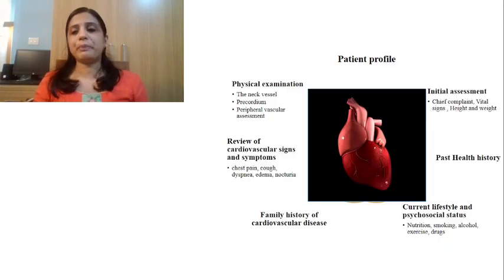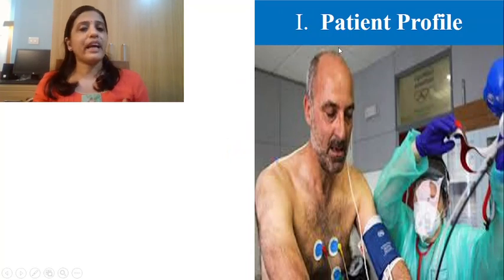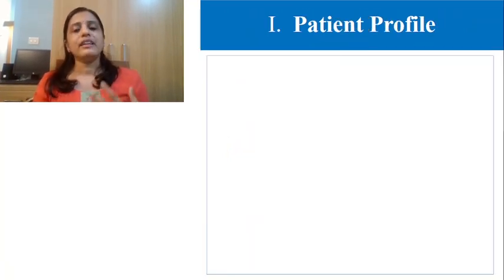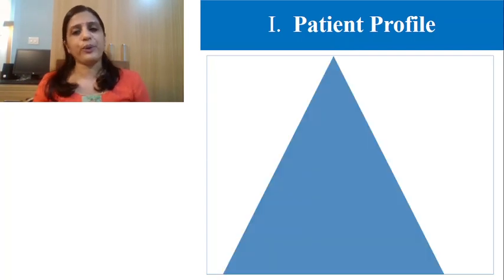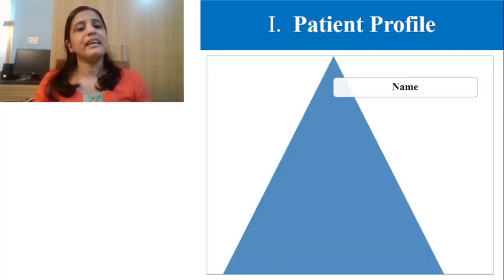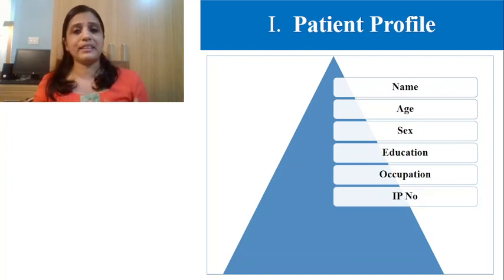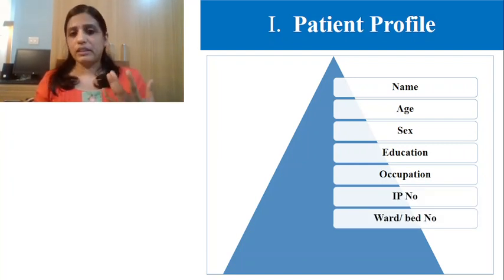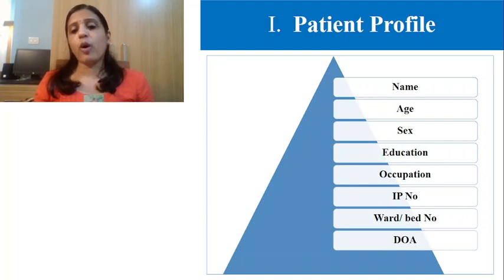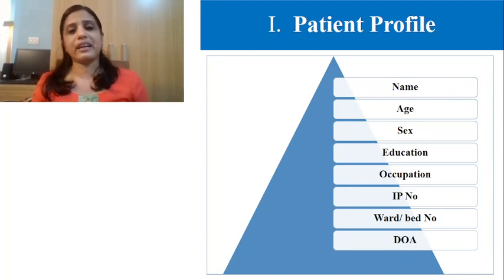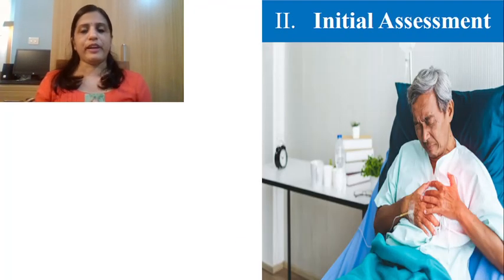The first section is patient profile. What we have to collect includes the name of the patient, age, gender, education, occupation, hospital inpatient number (IP number), name of the ward, bed number, date of admission, and the diagnosis — all these things come under the patient profile.